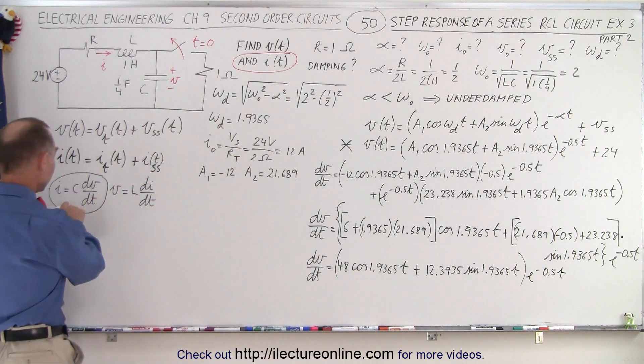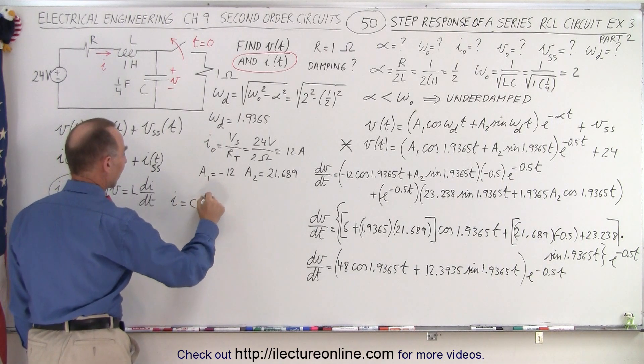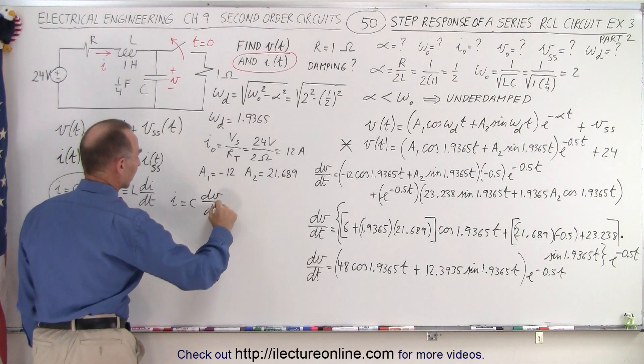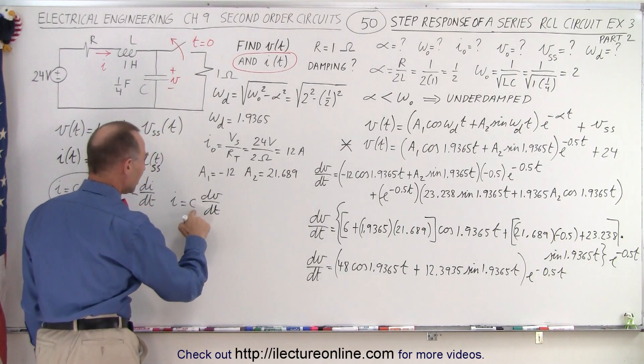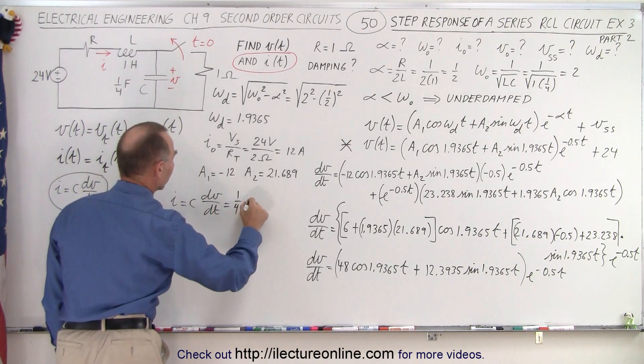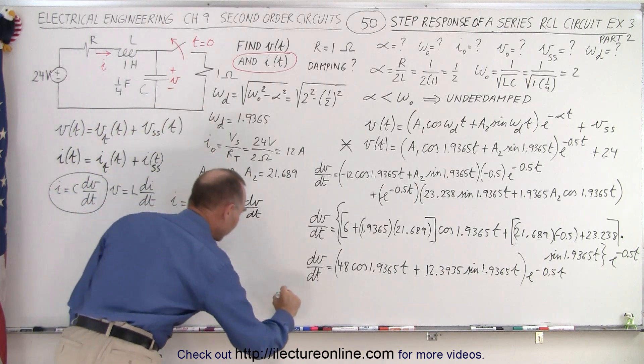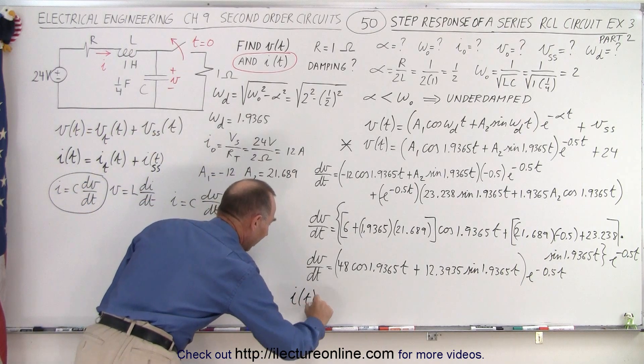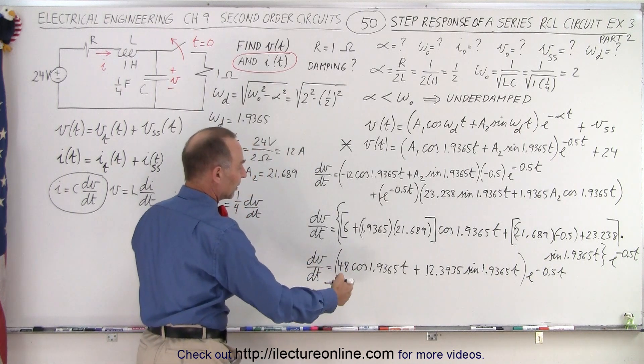Now we go back over here, and we realize that the current I is equal to C times dV/dt. So that means that I simply have to multiply this times C, and C is 1 quarter. So that's equal to 1 quarter dV/dt. So that means that the current as a function of time is equal to 1 quarter of this.